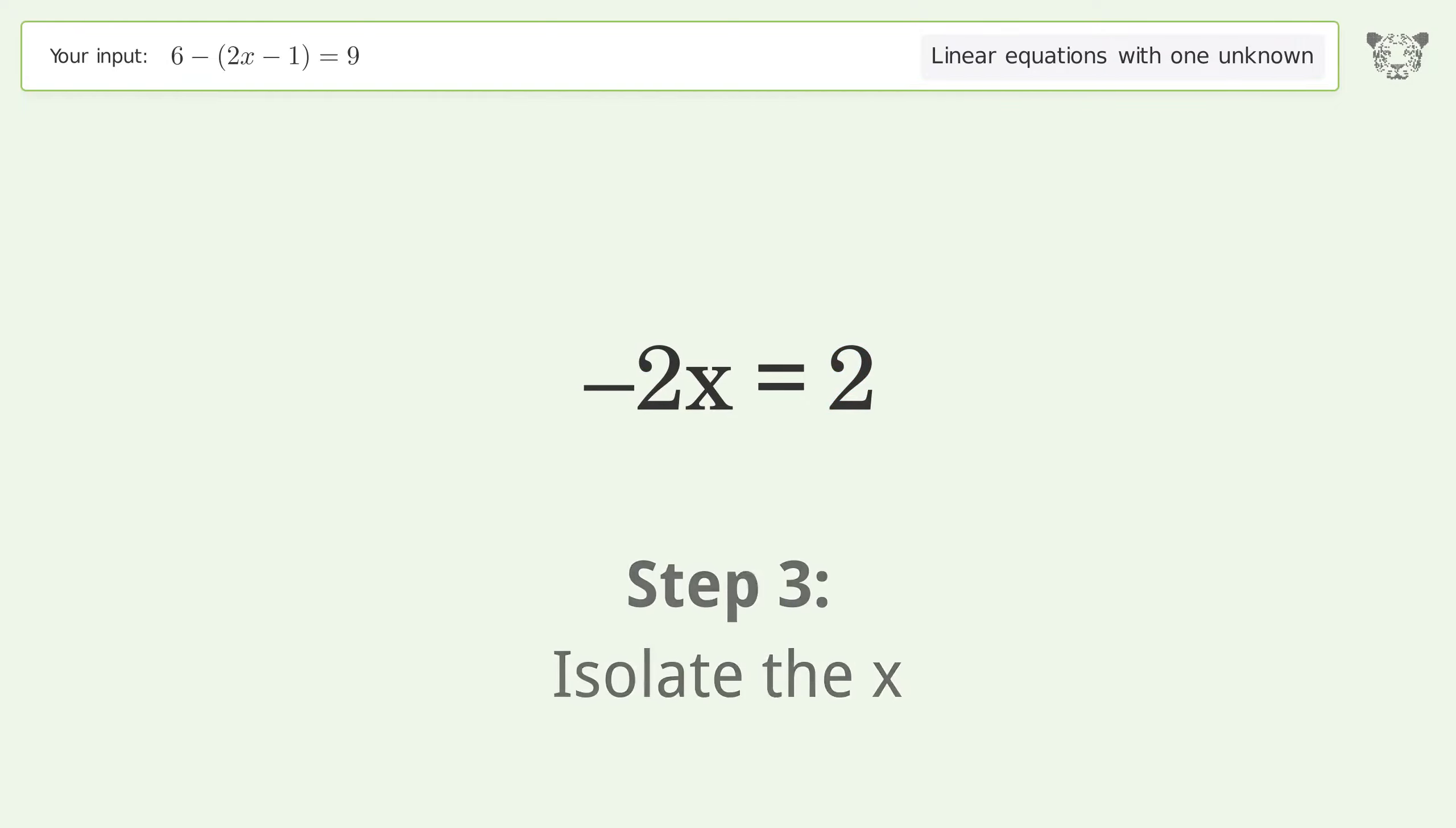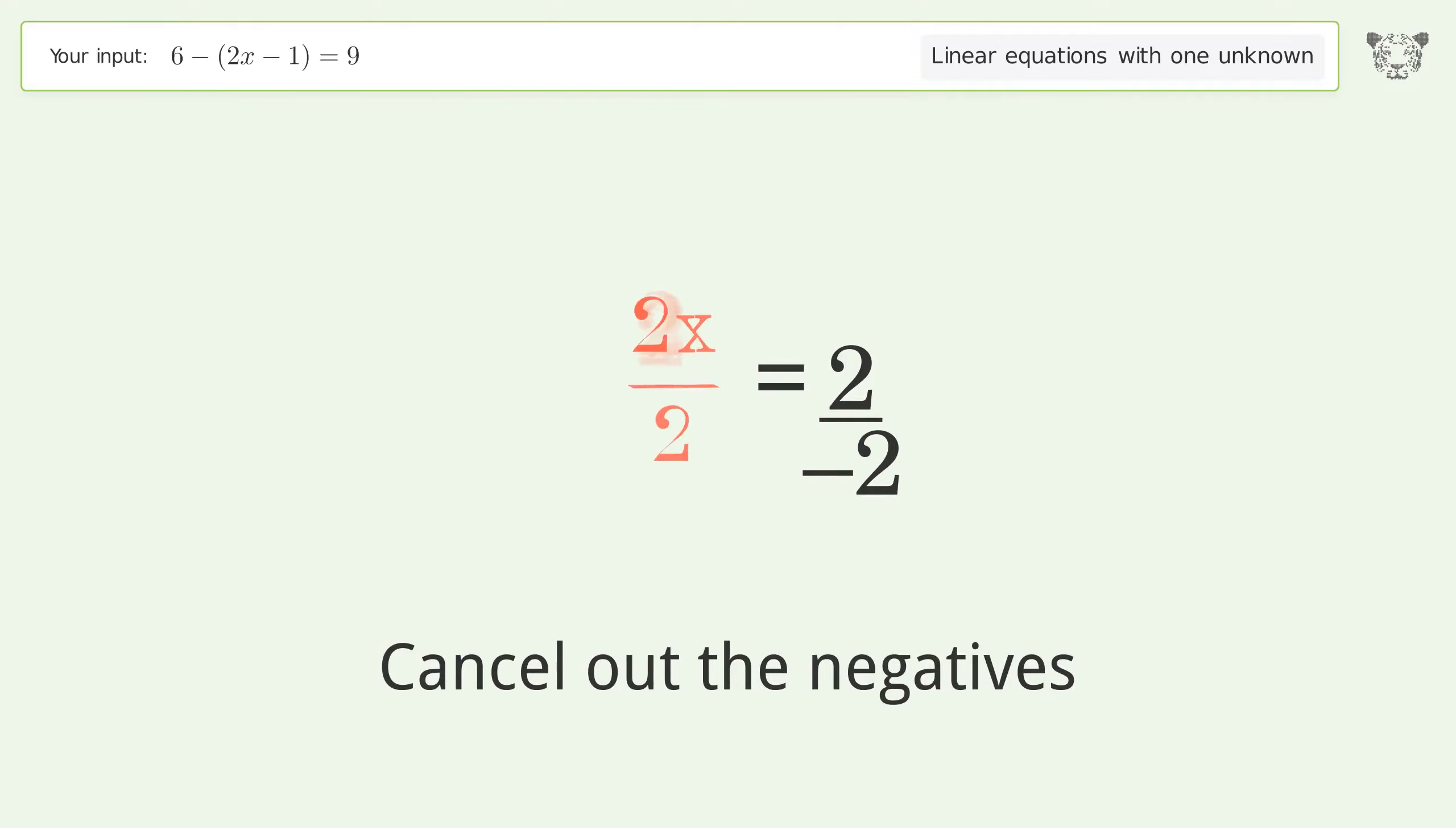Isolate the x. Divide both sides by negative 2. Cancel out the negatives. Simplify the fraction.